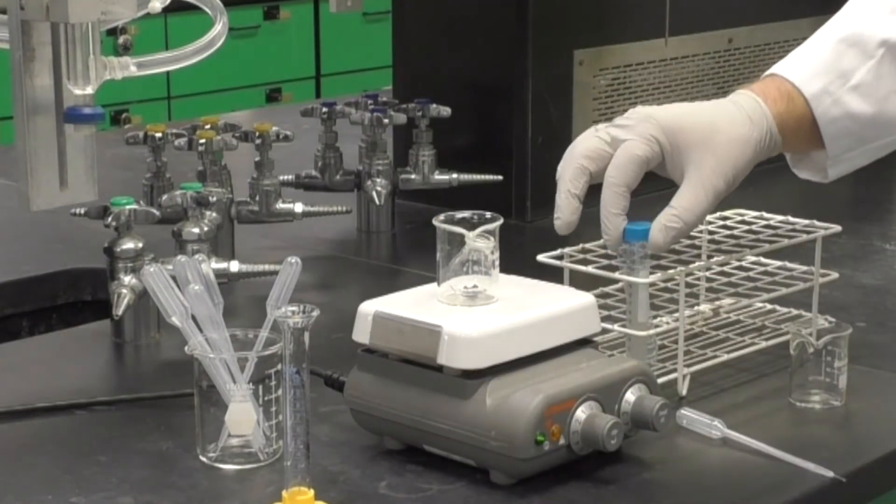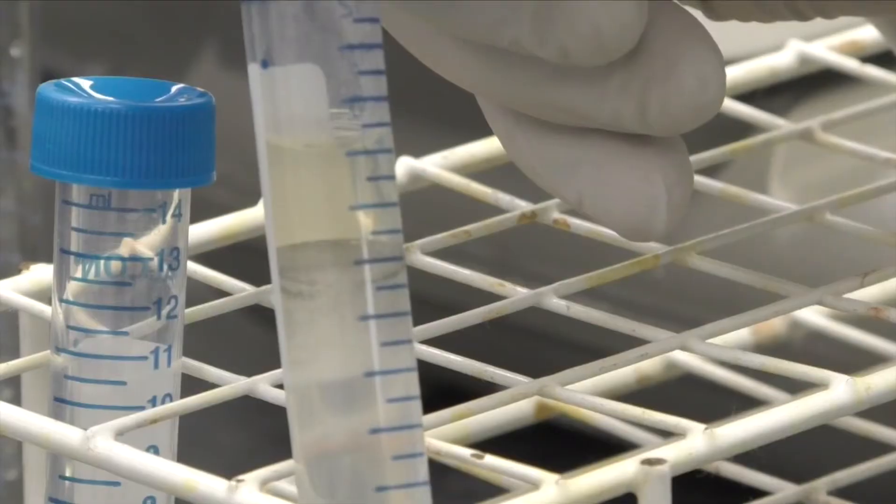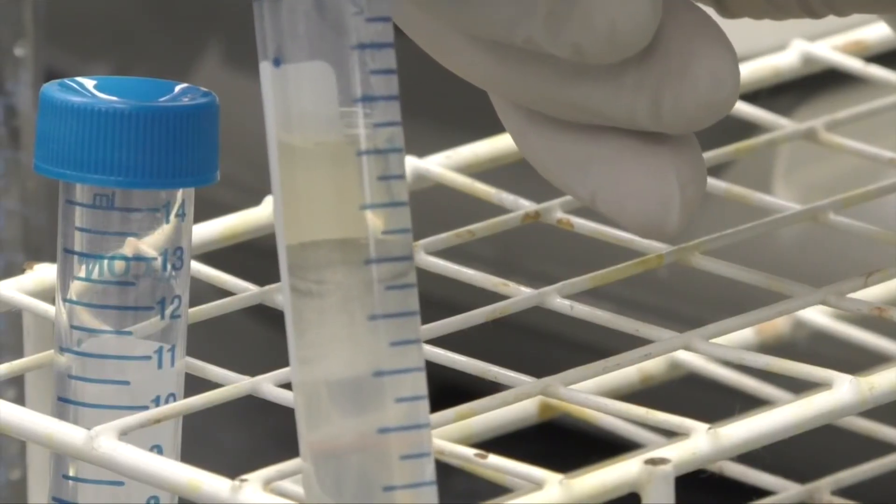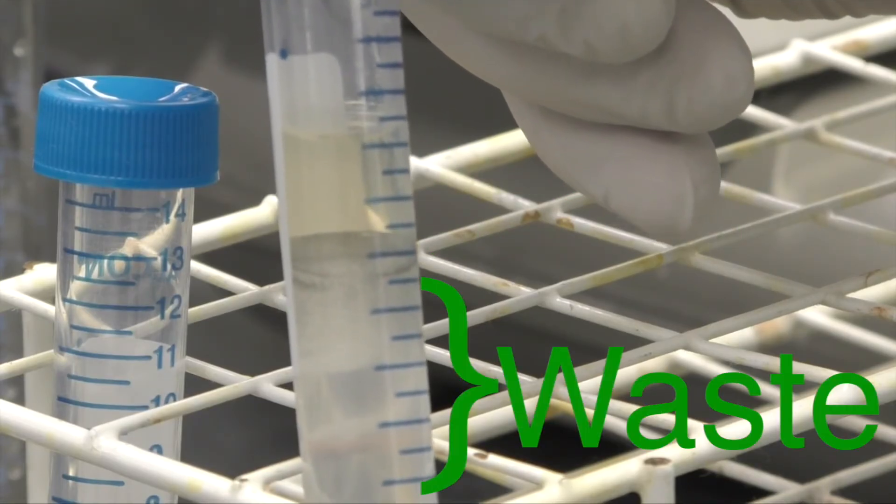Set the tube in an upright position in a test tube holder and wait for the layers to separate. The top layer is the organic layer containing your ester. The bottom layer is the aqueous waste layer.